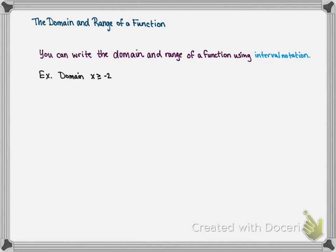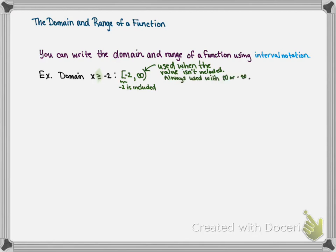For example, if we've got a domain written in inequality form as x is greater than or equal to negative 2, we could write this in interval notation by first considering what's the smallest value of x. If x is greater than or equal to negative 2, the smallest value is negative 2. It gets a squared-off bracket because negative 2 is included, and we know that because of the equal bar in the inequality symbol. Then the largest value that x can have is positive infinity, so we write comma, infinity, and infinity gets a curved parenthesis. We use this when the value is not included — always with infinity and negative infinity, or if there is no equal bar with the inequality symbol.